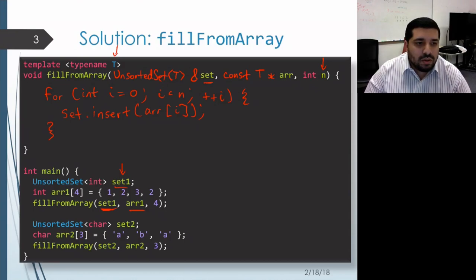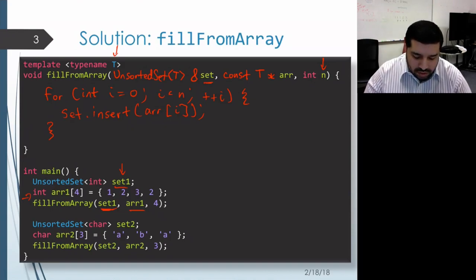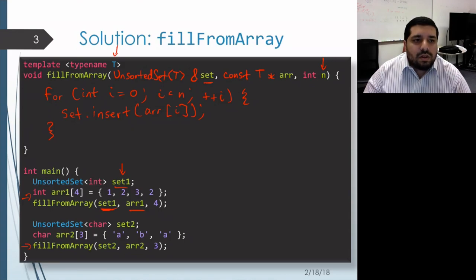So now if we actually were to run this code, it would work both for the case of int elements - in that case T would get deduced as type int, and then the first parameter would be unsorted set of int and the second parameter would be const int star. In the second case, T would get deduced as char, and so the first parameter would be unsorted set char and the second parameter would be const char star.